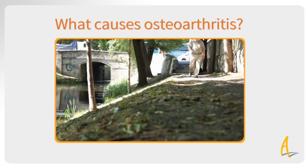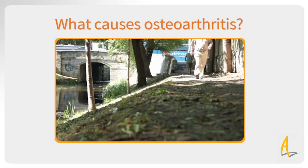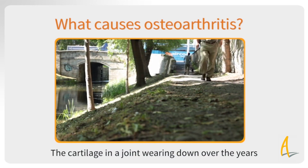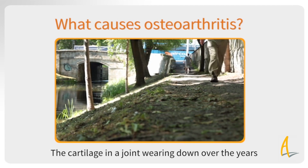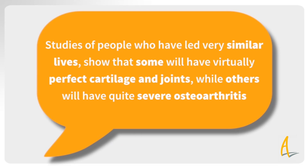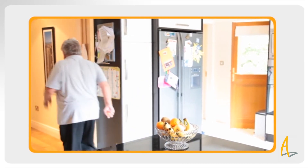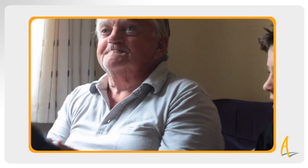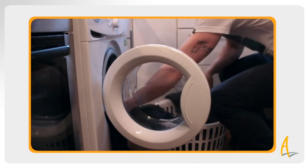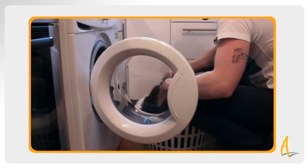Since osteoarthritis is so common in older people, it was traditionally thought to be caused by the cartilage in a joint wearing down over the years, like the sole of a well-worn shoe. However, studies of people who have led very similar lives showed that some will have virtually perfect cartilage and joints while others will have quite severe osteoarthritis. It seems as if there is an inbuilt protection against osteoarthritis in some people which is absent in others. We know the explanation is not as simple as wear and tear, but specific causes are still hard to pin down.